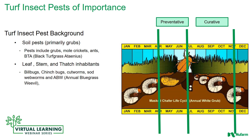Arena is also very quick acting for the reduction of turf damage caused by foraging animals like skunks and raccoons. There are a number of insects in the turf profile, but we're going to focus on the turf insect pests of importance. Soil pests are primarily grubs, and we'll spend most of our time on those. There are also mole crickets, ants, and the black turfgrass ataenius.